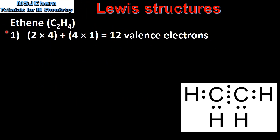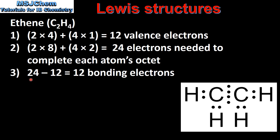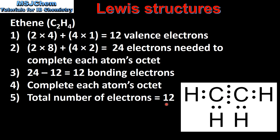In our last example we look at ethene, which has a carbon-to-carbon double bond. For step 1 we get 12 valence electrons. 24 electrons are needed to complete each atom's octet. When we subtract step 1 from step 2 we get 12 bonding electrons in the molecule. By having 4 electrons between each carbon atom we have a total of 12 bonding electrons and we also complete each atom's octet. The 4 shared electrons represent a carbon-to-carbon double bond. Finally, the total number of valence electrons is 12, equal to the value calculated in step 1.